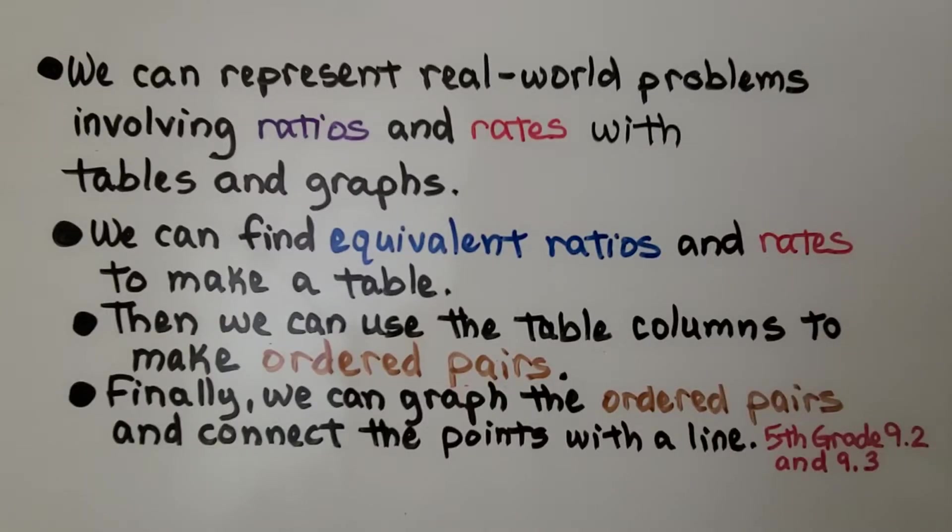We can represent real-world problems involving ratios and rates with tables and graphs. We can find equivalent ratios and rates to make a table. Then we can use the table columns to make ordered pairs. Finally, we can graph the ordered pairs and connect the points with a line.